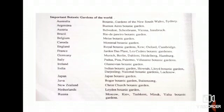These are some important Botanical Gardens of the world in alphabetical order, starting from Australia up to Russia. In India, three are mentioned: Indian Botanic Garden in Howrah, Kolkata; Lloyd Botanic Garden in Darjeeling; and National Botanic Gardens of Lucknow. These are some important ones in India; there are many more.